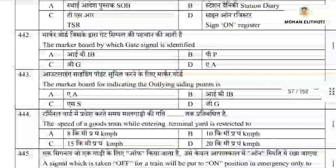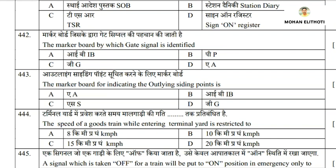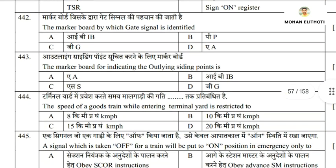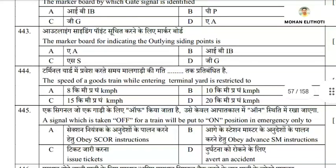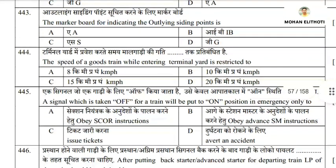Coming to the next question 442: the marker board by which a gate signal is identified. We have markers that identify gate signals and intermediate block signals. The permissible signal distance signal can be identified by P Marker, and automatic signals are identified by their respective markers.